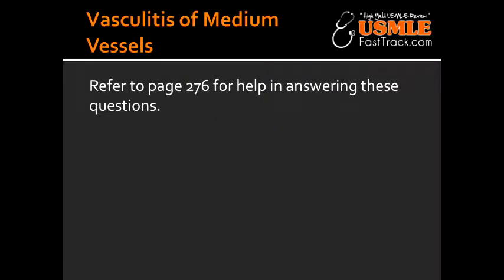Vasculitis of Medium-Sized Vessels. Name the three vasculitides that affect medium-sized vessels. The three vasculitides include polyarteritis nodosa, Kawasaki's disease, as well as Buerger's disease, also known as thromboangiitis obliterans.